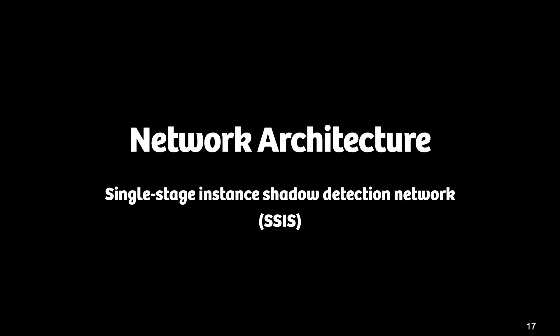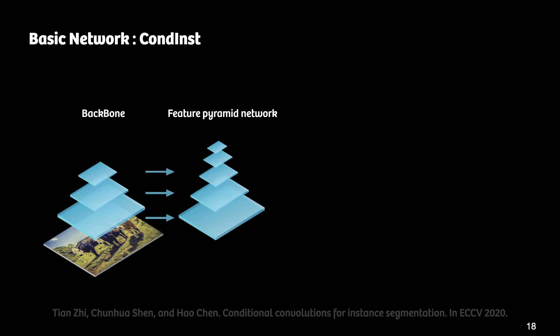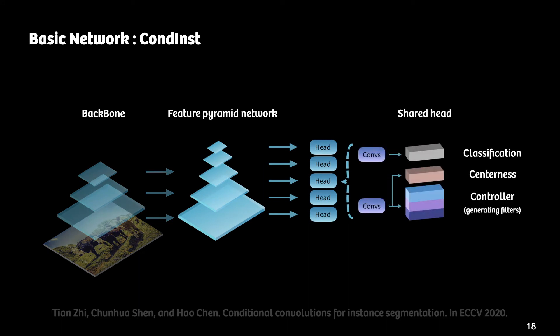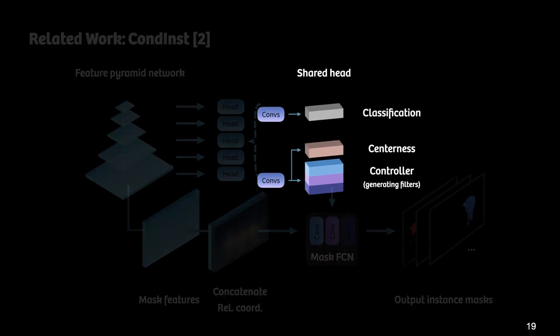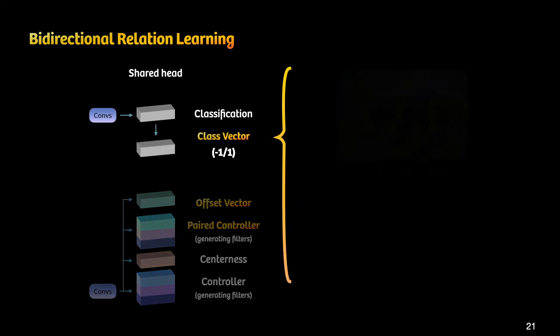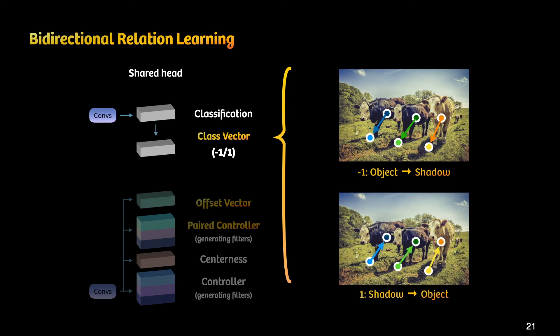Here we introduce the network architecture of our single-stage instance shadow detection network, SSIS for short. We employ CondInst as our basic network, which first builds a feature pyramid network to extract different levels of features. It then adopts multiple heads to predict the classification score, centerness score, and controller, whose generated filters are used in MaskFCN to predict instance masks. Further, we predict a bidirectional controller, offset factor, and class factor for each instance in the shared head, where class factor minus 1 indicates the direction from object to shadow, and 1 indicates the direction from shadow to object.